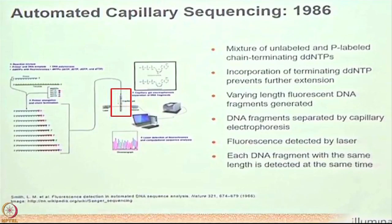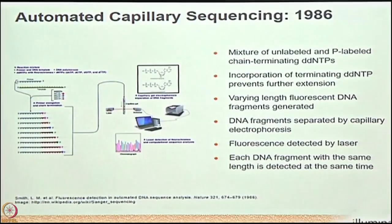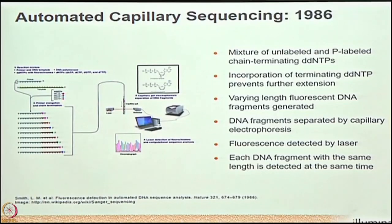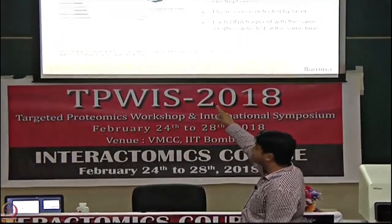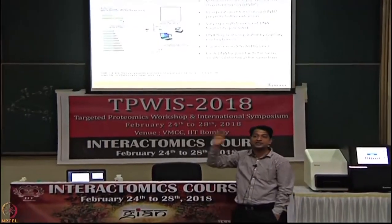After sequencing, all the fragments are run through a capillary, which is essentially a gel. There is a detector, and all sequences have their last base labeled with a fluorophore. The smallest fragment passes through the gel first — if it contains A, you get a signal for A. The next fragment gives G, and so on. This is the basic principle of Sanger sequencing.